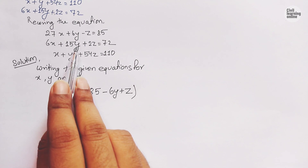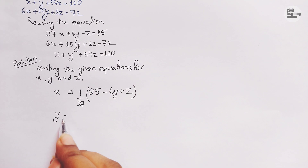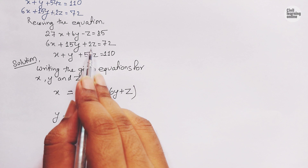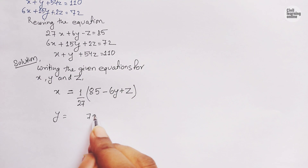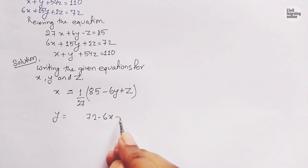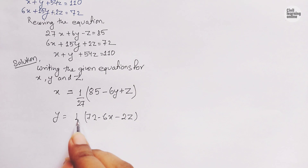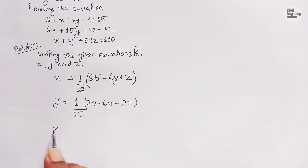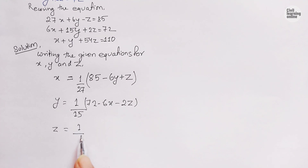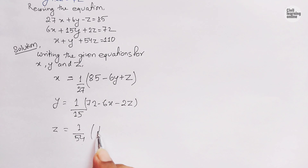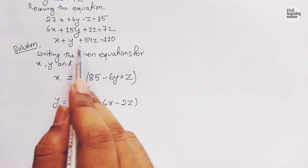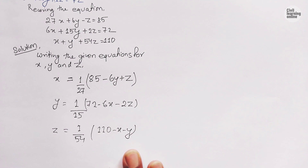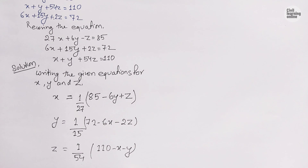Similarly, for y we rearrange to get y = (72 - 6x - 2z) / 15. And for z we get z = (1/54)(110 - x - y). These three equations for x, y, and z are now ready for iteration.